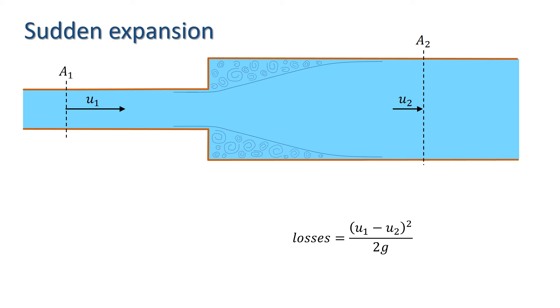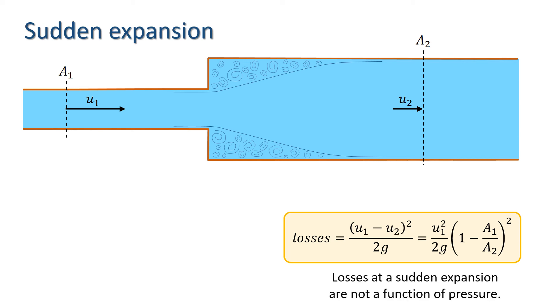This can also be written in terms of U1 only by again applying continuity, which tells us that U1A1 equals U2A2. Looking at this, it is interesting to note that the losses at a sudden expansion are not a function of pressure.